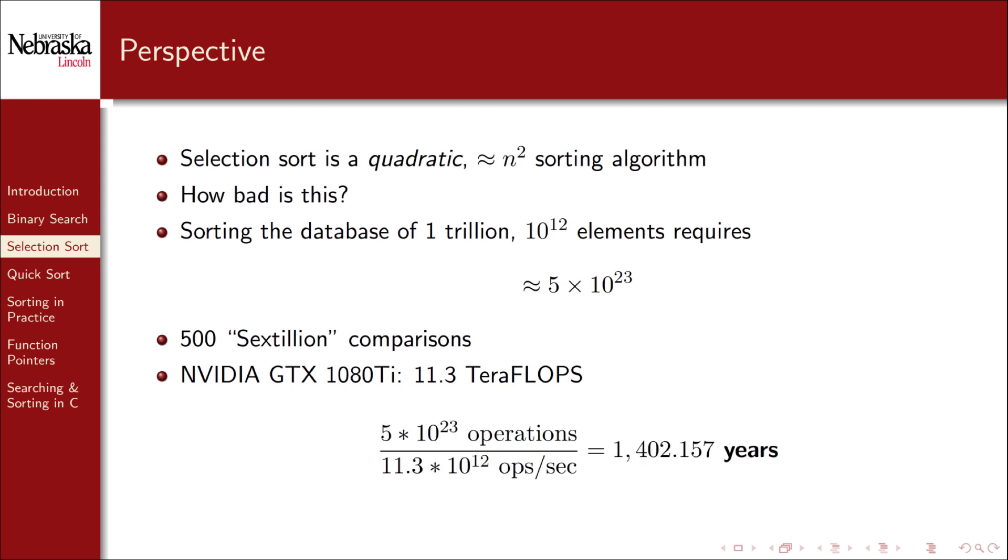500 sextillion operations at 11.3 trillion operations per second will result in over 1,400 years. In other words, selection sort is so bad that it would take on the order of centuries to sort this database. It's also important to understand that this is only a moderately large database. It's nothing compared to true big data databases or even data that you could find at most mid-level companies. Clearly, selection sort is not a feasible algorithm for even moderately large datasets.